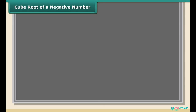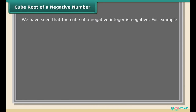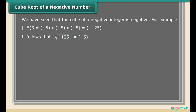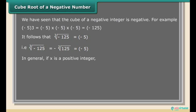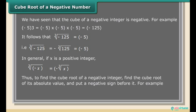Cube root of a negative number: We have seen that the cube of a negative integer is negative. For example, (−5)³ = (−5) × (−5) × (−5) = −125. It follows that ∛(−125) = −5. That is, ∛(−125) = −∛125 = −5. In general, if x is a positive integer, ∛(−x) = −∛x. Thus, to find the cube root of a negative integer, find the cube root of its absolute value and put a negative sign before it. For example, ∛(−64) = −∛64 = −4.